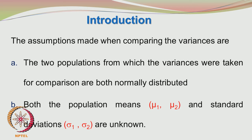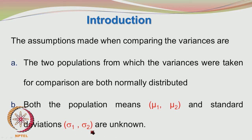The F distribution developed by Fisher is widely used for this purpose. The two populations from which the variances were measured for comparison are both normally distributed. The population parameters mu1, mu2, and standard deviations sigma1 and sigma2 are not known.